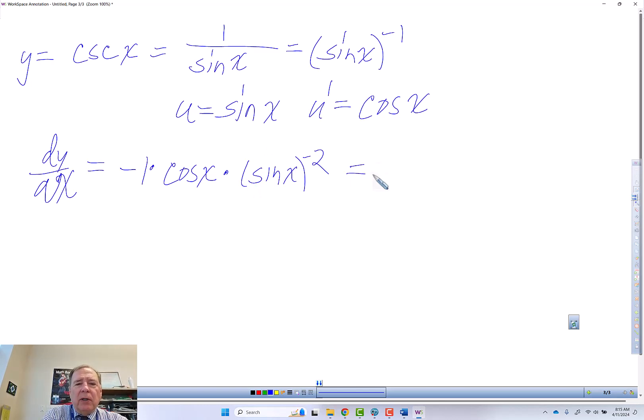So if we distribute that out, we got a negative 1 over sine or sine to the negative 1 of x times cosine of x over sine of x, which is the same thing as negative cosecant x times cotangent x.